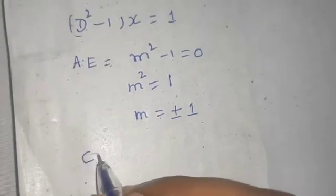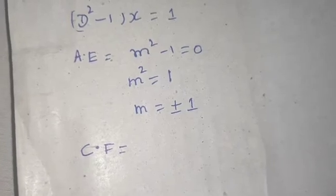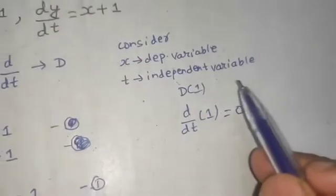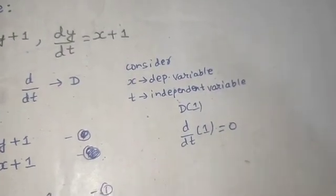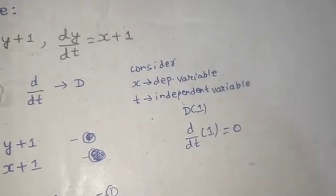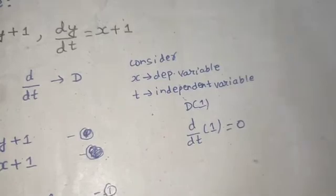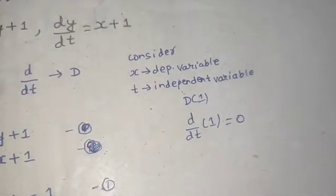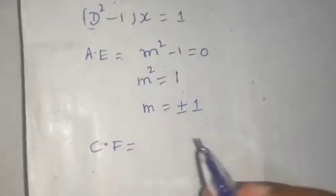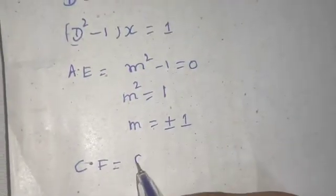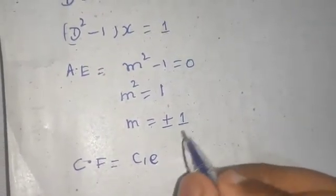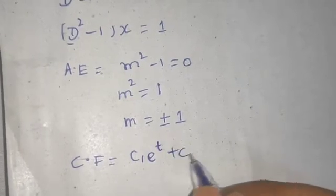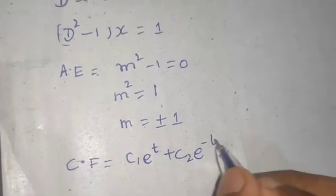The complementary function is always written in terms of the independent variable. Here t is the independent variable, so the CF is: x_CF = c₁e^(m₁t) + c₂e^(m₂t). With m₁ = 1 and m₂ = -1, this becomes c₁e^t + c₂e^(-t).